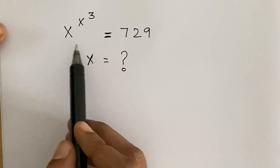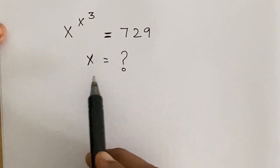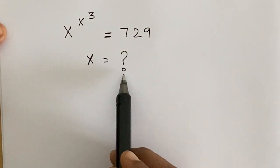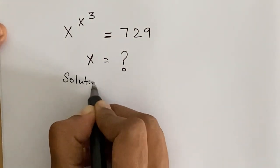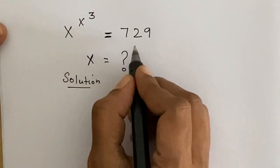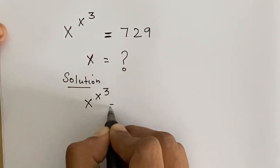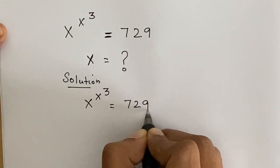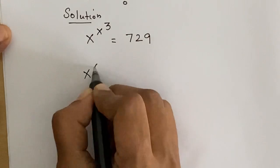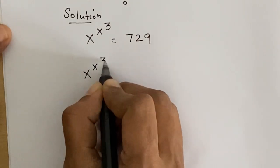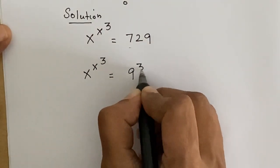Hi, let's solve this nice equation. x to the power x cubed equals 729. Then what is the value of x? Let's write x to the power x cubed equals 729, which can be written as 9 cubed.